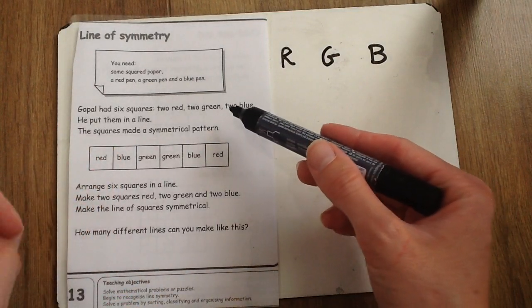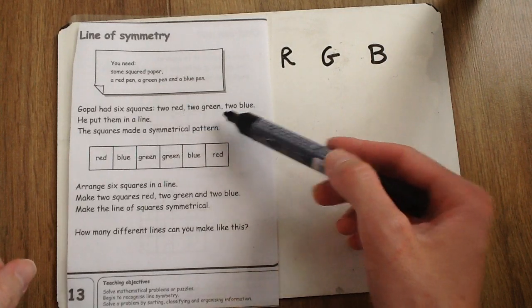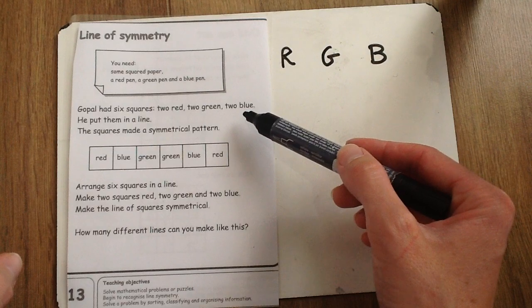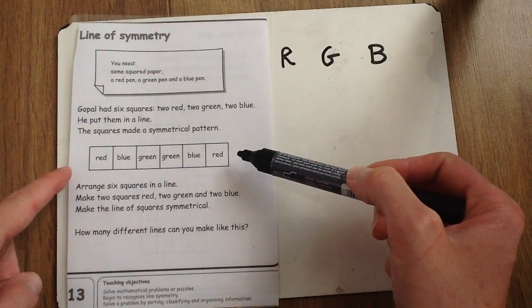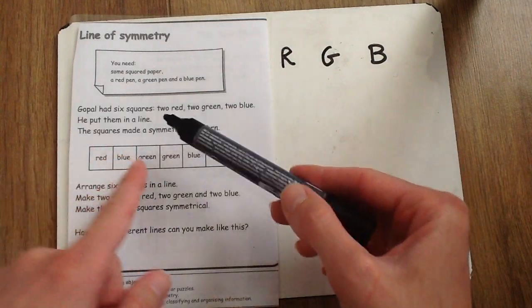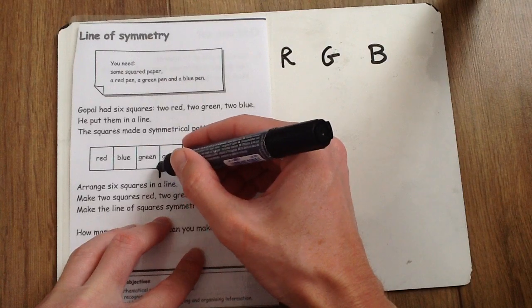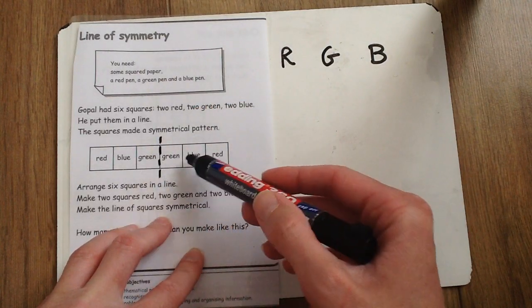It says here that Gopal has six squares. He has two red squares, two green squares and two blue. He put them in a line, like in the example, and the squares make a symmetrical pattern. That means they are the same on one side of this dotted line as on the other.